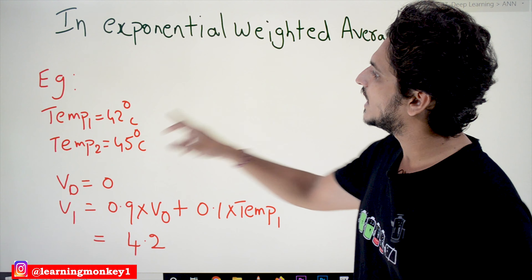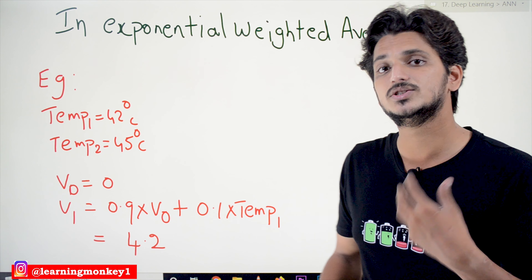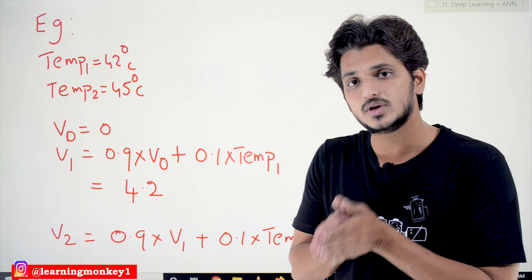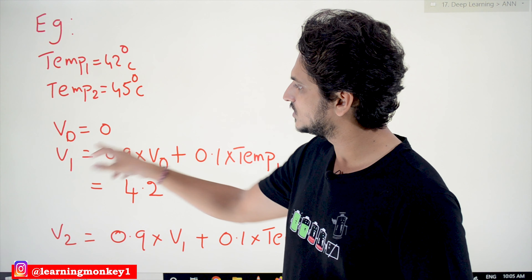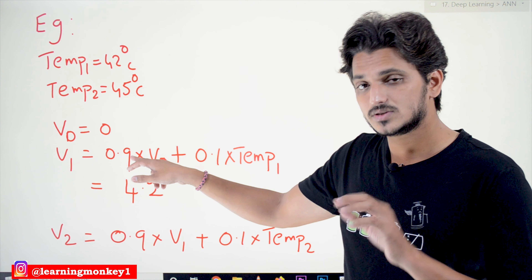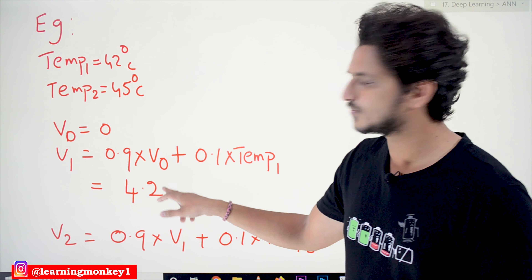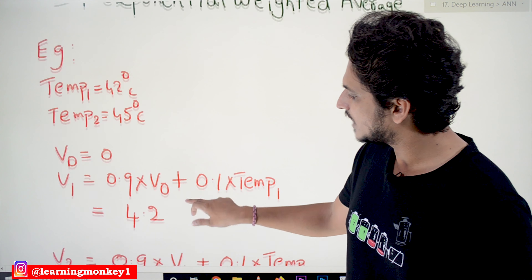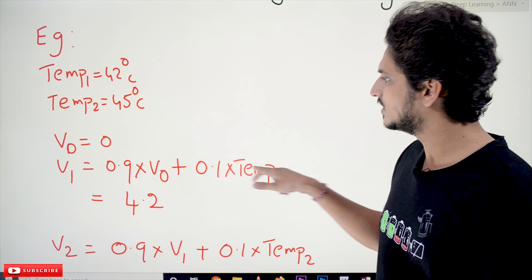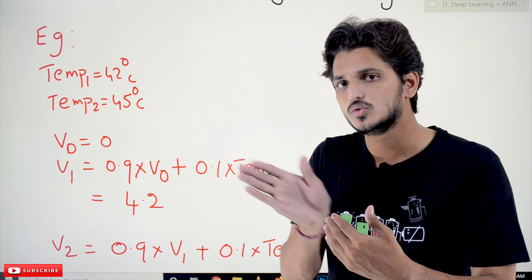This is the example we considered for Exponential Weighted Average. Temperature on day 1 is 42 degrees centigrade, day 2 is 45 degrees centigrade, and so on. We considered 365 data points and calculated the Exponential Weighted Average. Initially we set V0 = 0. When calculating V1, V1 = 0.9 * V0 + 0.1 * Temp1. This gives 4.2, but the actual temperature is 42 degrees — we are getting a very small value initially. That is the problem with this equation. As the number of points increases, it converges to the average value.